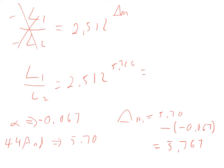So, how do you raise something to the 5.767 power? There's a button for it on a calculator. You do 2.512 raised to the 5.767, and the answer is 203 times brighter.